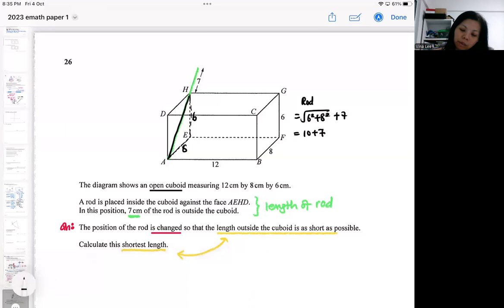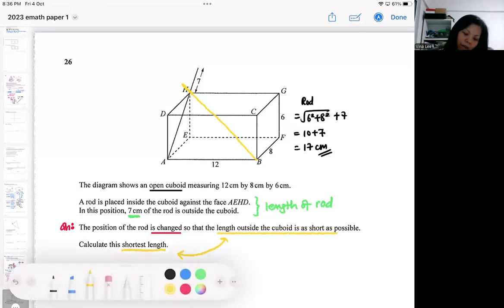So the next problem will be how do you place it? You need to visualize. This one involves a bit of visualization. So the shortest length is when you actually place the rod here, the furthest apart, corner to corner. So if I place it there, then I will have very little left. Most of it will be inside. So my aim is to find this part - how much is inside the box first.